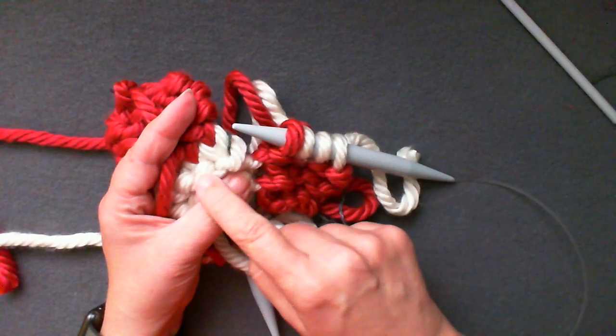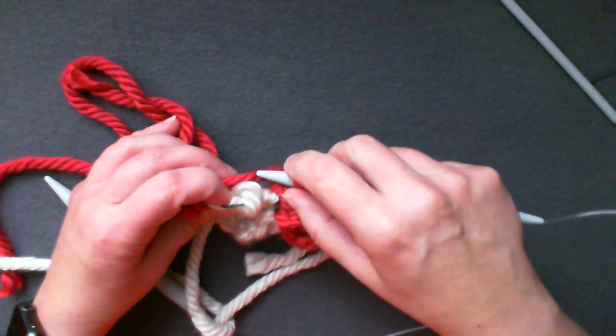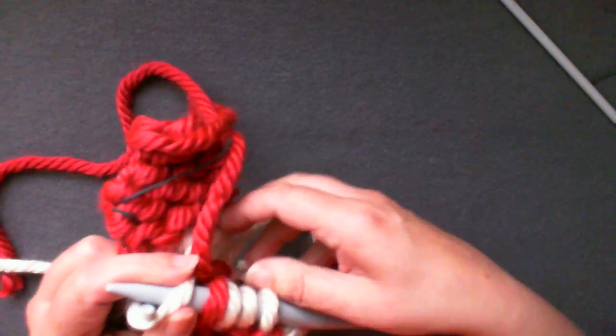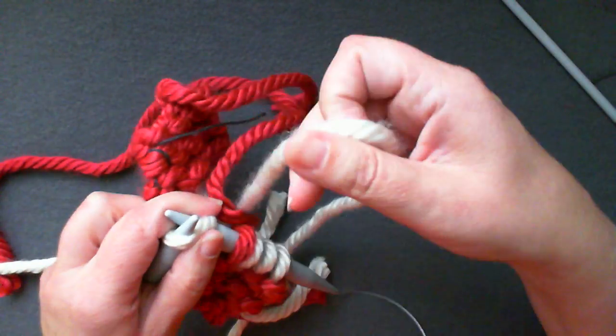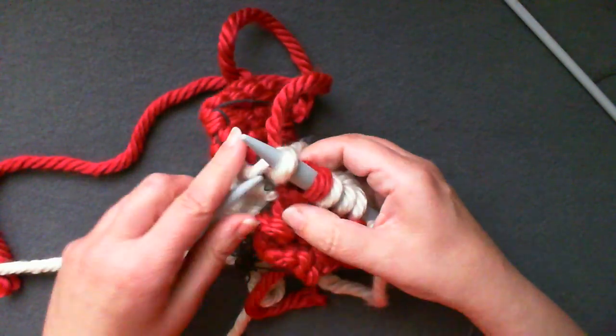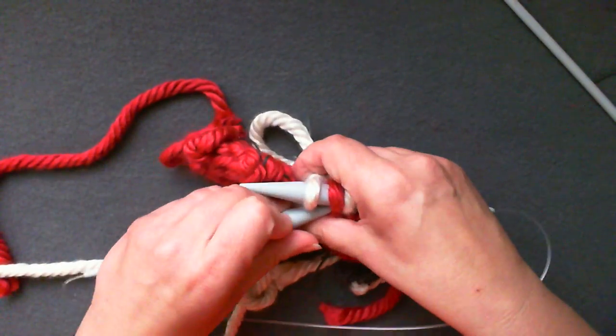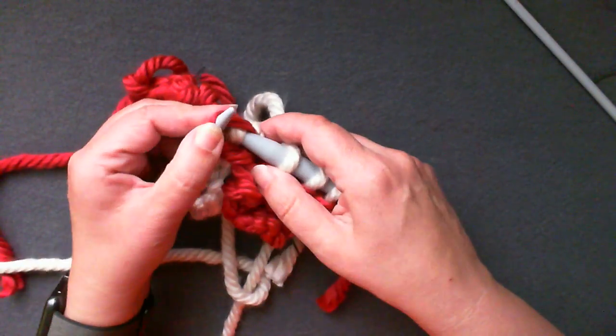You may look at this joining stitch and think that the garter ridge should join a row of red stitches and that you changed yarns too early. That is not the case, don't worry. Once you pass the red slipped stitch over the new white stitch, everything will be joined perfectly.